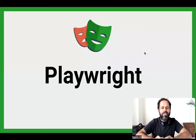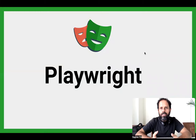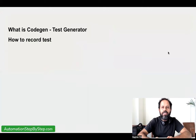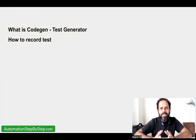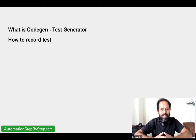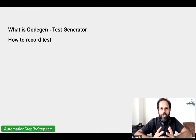Hello and welcome. I'm Raghav and today we are going to learn how we can record our test in Playwright, and this is going to be very easy and very interesting. In the last session, we learned how to write our tests from scratch. In Playwright, we have a tool called CodeGen, also called the Test Generator, and we can use it to record our test and get Playwright test scripts created automatically.